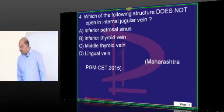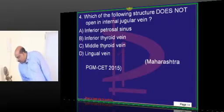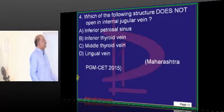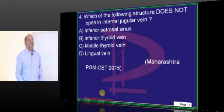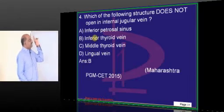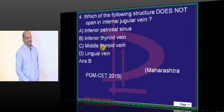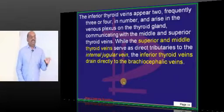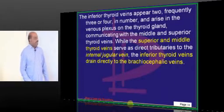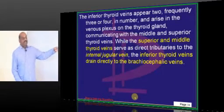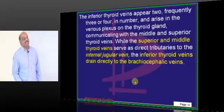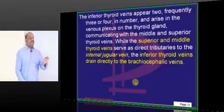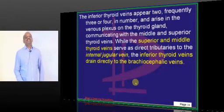Which structure does not open into the internal jugular vein? We have different thyroid veins. The superior and middle thyroid veins drain into the internal jugular vein, whereas the inferior thyroid vein directly drains into the brachiocephalic vein. There will be no surprise if the same MCQ repeats in the next APPG, TGPG, and TNPG.